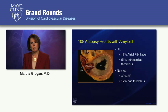The take-home point is that if you have a patient with atrial fibrillation and you're considering elective cardioversion, it is really not recommended to do so without a transesophageal echo to exclude clot first, along with concomitant anticoagulation.